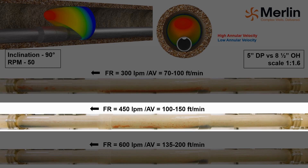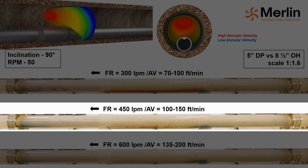At the intermediate flow rate of 450 liters per minute through the in-gauge interval, the annular velocity is approximately 150 feet per minute, which corresponds to the Merlin recommended minimum annular velocity for a fresh hole clean. At this annular velocity, it can be seen that the cuttings do not settle in the in-gauge interval — they only settle in the enlarged interval, where the annular velocity is approximately 100 feet per minute.